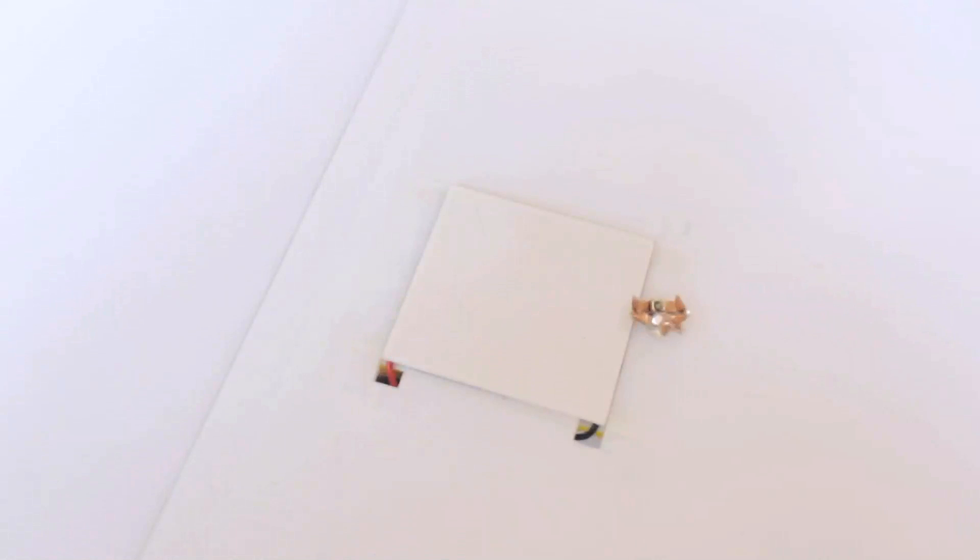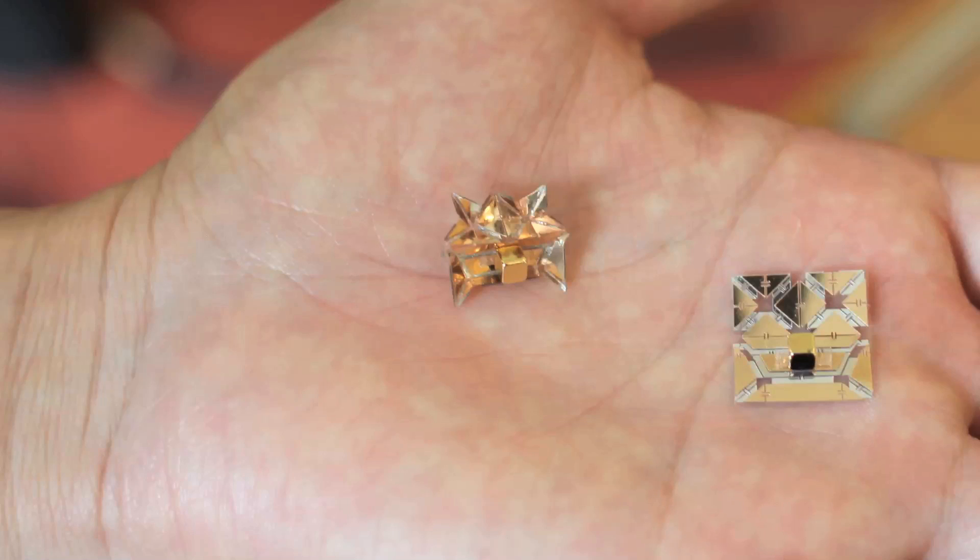For the short term, we see these robots as potentially extremely useful in inspection tasks because they are small and can travel through very intricate, small, narrow pipelines that are difficult to inspect with today's technology.